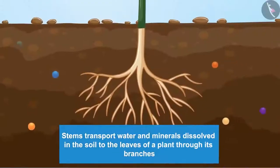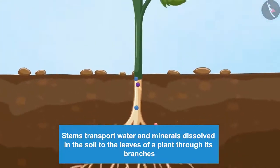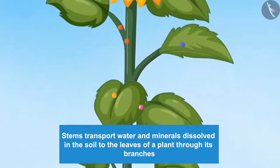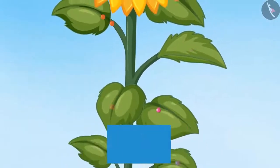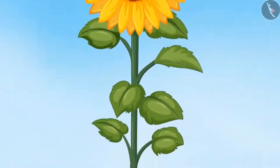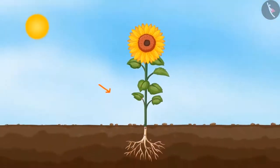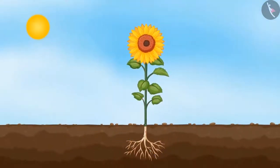The stem is the part of the plant that supports its upper structure. Stems transport water and minerals dissolved in the soil to the leaves through branches. The stem also transports food made in the leaves to various other parts of the plant.